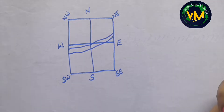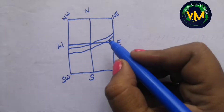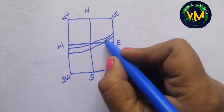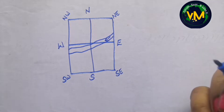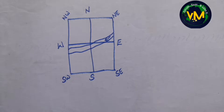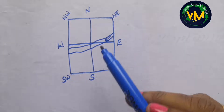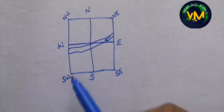Now look for arrows inside the river. We have an arrow in the river, so I am drawing the arrow too. See from which quadrant to which quadrant the arrow is going - it is coming from northeast to southwest.